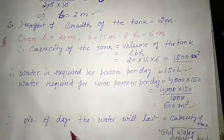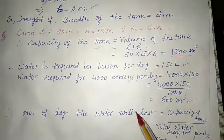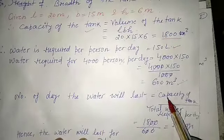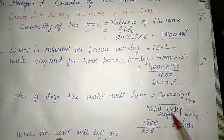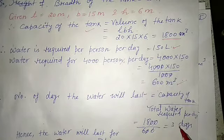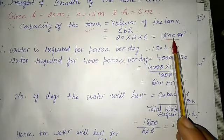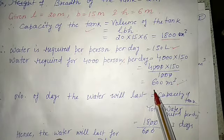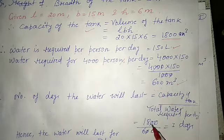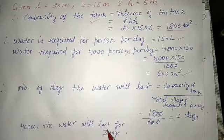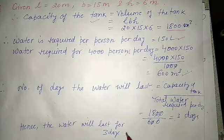To find the number of days the water will last, we use: number of days = capacity of tank ÷ total water required per day = 1800 ÷ 600 = 3. Hence the water will last only for 3 days.